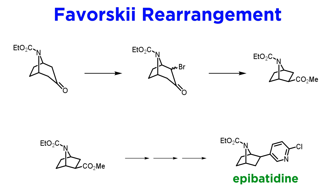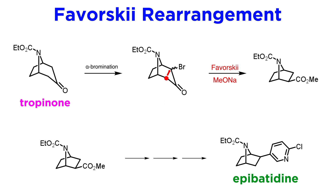Another ring contraction was applied to the lab synthesis of the poisonous alkaloid epibatidine found in frogs. This time we start from another natural product, the protected tropanone we see here. This is alpha-brominated to yield a mixture of exo- and endo-alpha-bromides. Ring contraction using methoxide yields the desired 2-2-1 skeleton from the 3-2-1 precursor. Rather standard chemistry then converts the ester to the desired target, epibatidine, as a racemate.